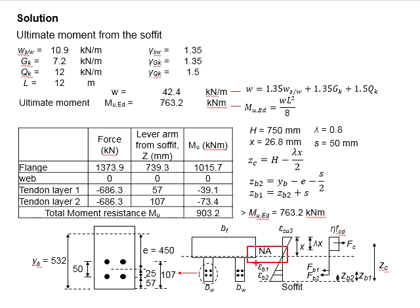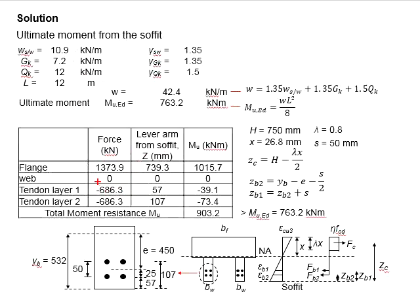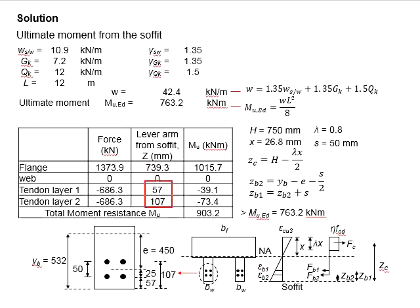As the neutral axis of bending falls within the flange of the member, the web does not contribute any compressive force. Based on the tensile strength developed in the tendon of each layer, the values have been adopted. Next, you need to determine the lever arm, which is defined as the distance from the centroid of the stress block and the centroid of the steel reinforcement to the soffit of the beam. These values can be obtained from the previous calculation steps.